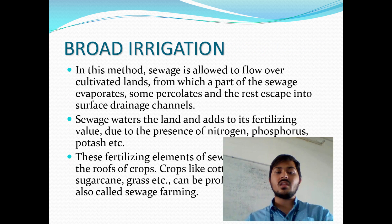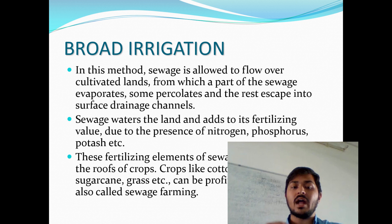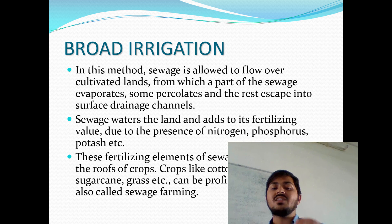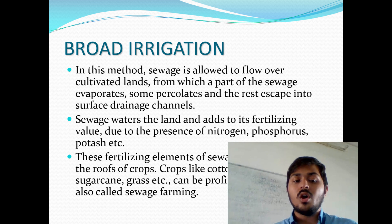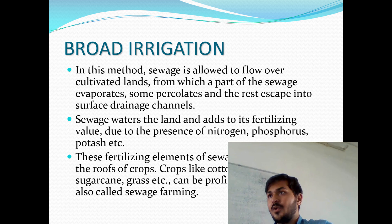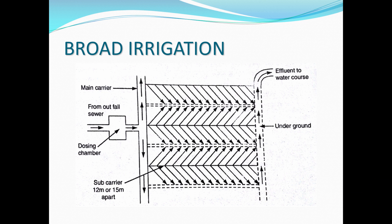Broad irrigation is a method where sewage is allowed to flow over cultivated land, from which part of the sewage evaporates and the rest is drained away through surface drainage channels. The sewage water adds fertilization value to the land due to the presence of nitrogen, phosphorus and potassium, which are consumed by the roots of the crop. Crops like cotton, potatoes and sugarcane show profitable growth. The sewage flows through, disperses, and whatever remains goes underground and helps crops grow.